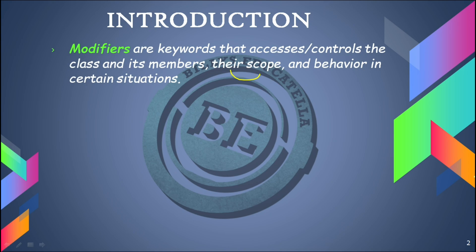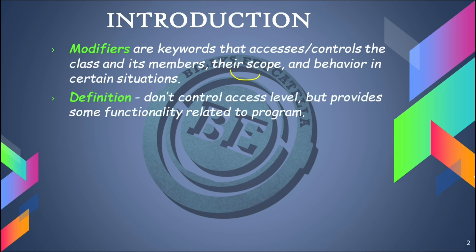Coming to the definition of non-access modifiers: they don't control any access level, but provide some functionality related to the program. The main aim of non-access modifiers is to provide functionality related to the program, but they don't provide any access control or access level. That entire access level control is provided by the access modifiers, as discussed in the previous session.